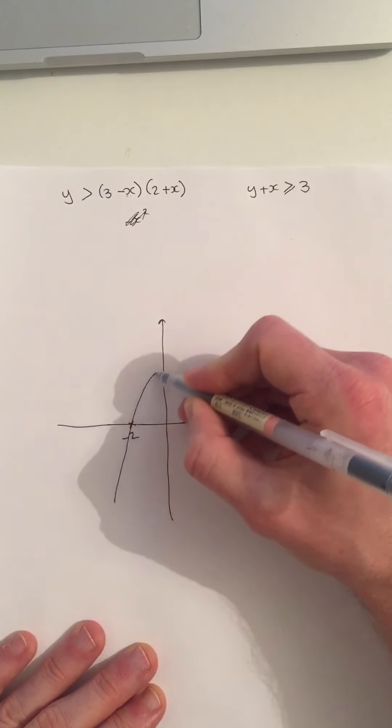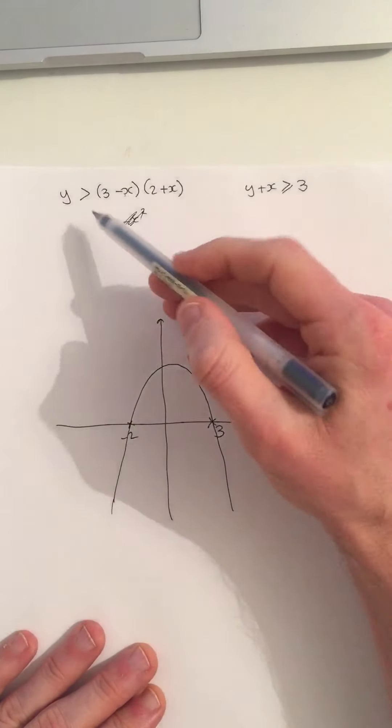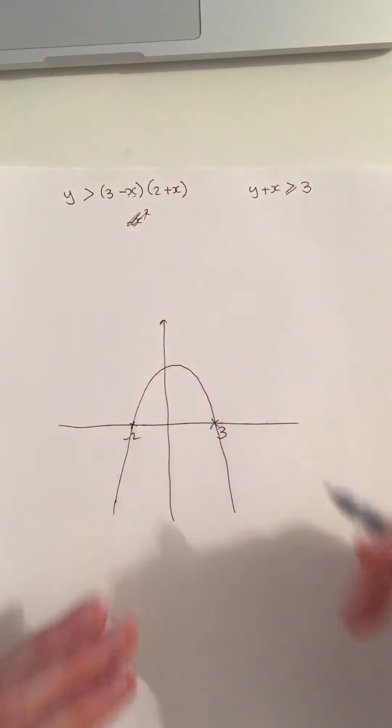So I can now draw this graph that looks something like that. I want y to be above that. y has to be greater than this. So it has to be above this n.